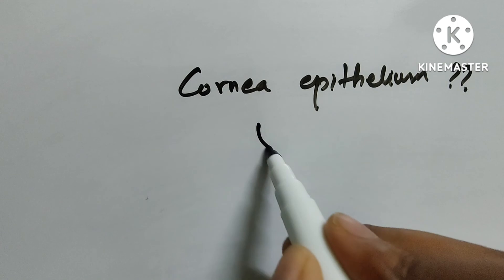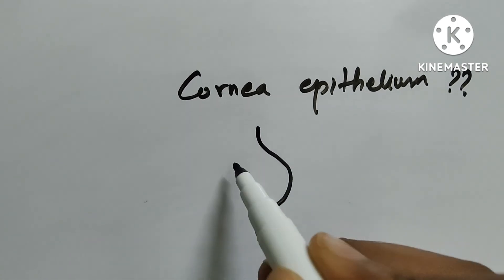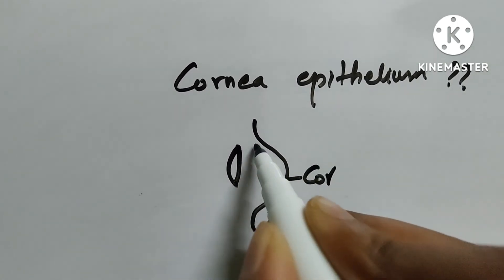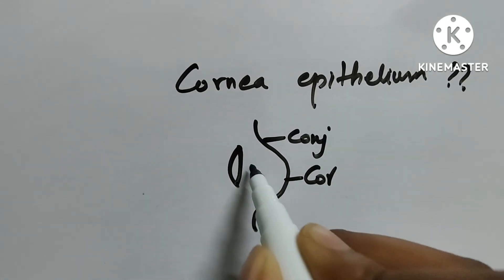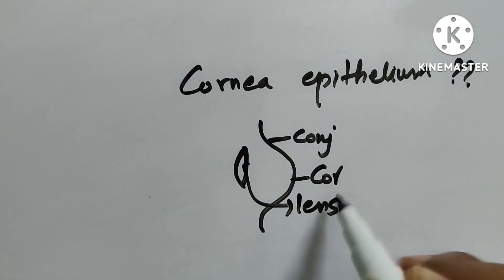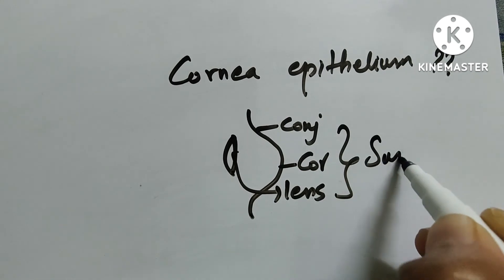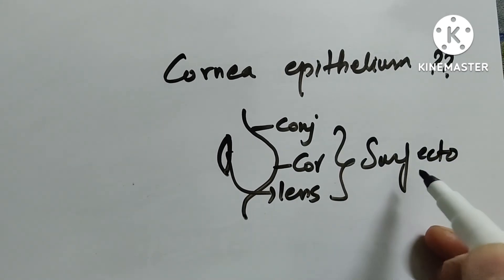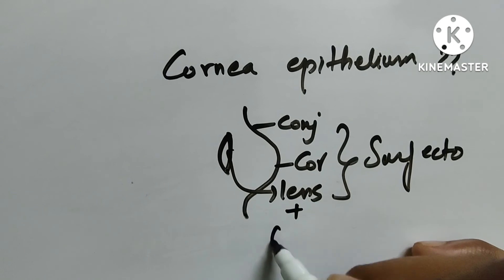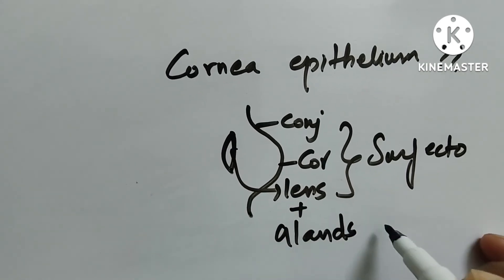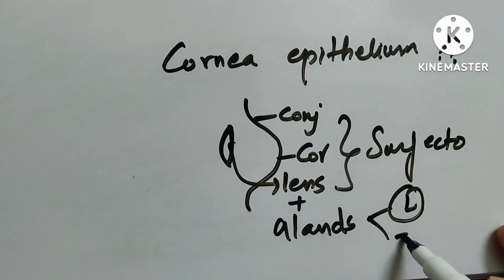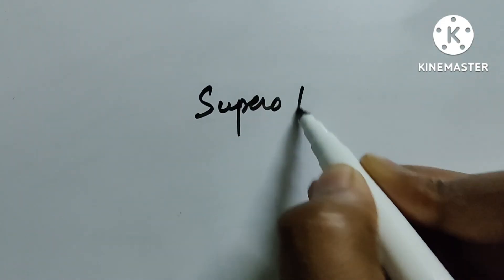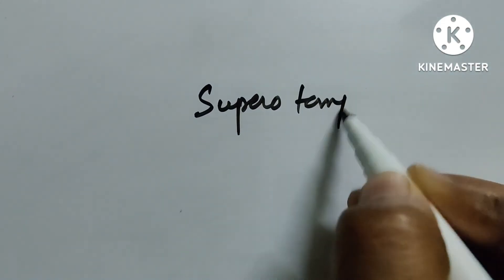Now corneal epithelium — the last one. Corneal epithelium is towards the surface. Just remember the three C's: cornea, conjunctiva, crystalline lens — all from surface ectoderm. There are also two other organs: the glands — tarsal glands and lacrimal glands — also from surface ectoderm.